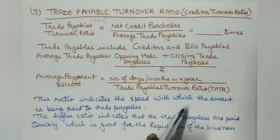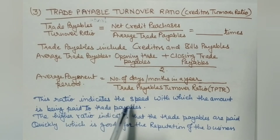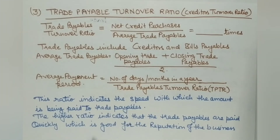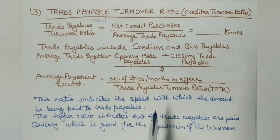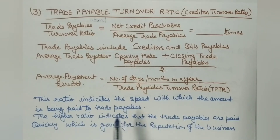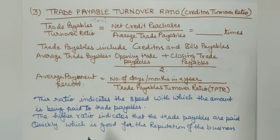This ratio indicates the speed with which the amount is being paid to trade payables. A higher ratio indicates timely payment, which is good for the reputation of the business. It also helps in cash management — knowing whether we have 2 or 3 months to arrange cash for paying our creditors.